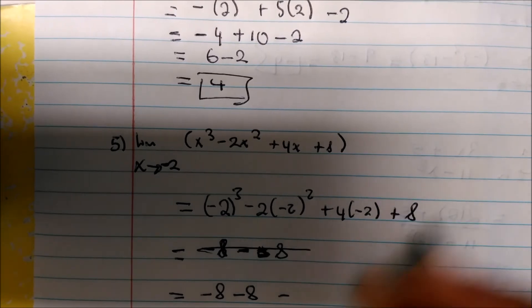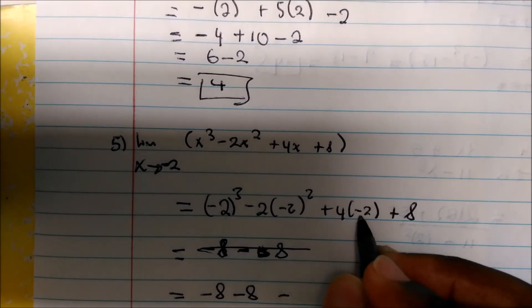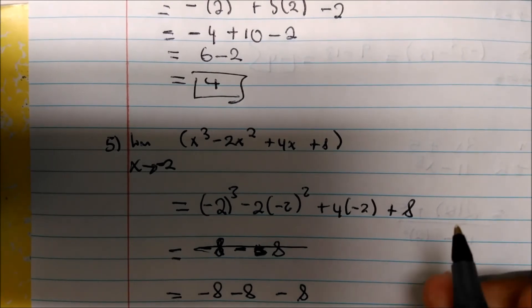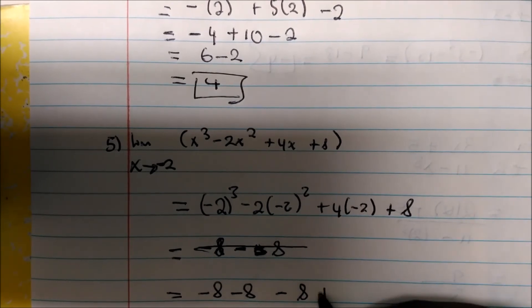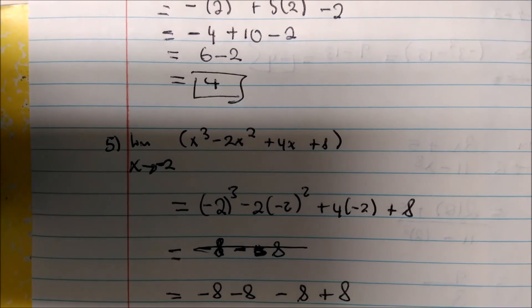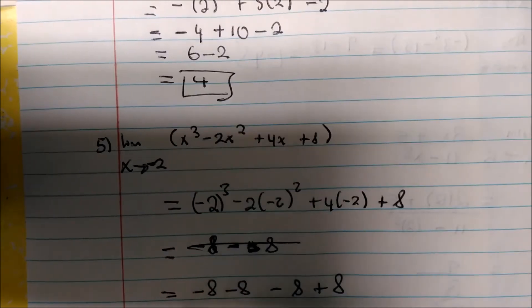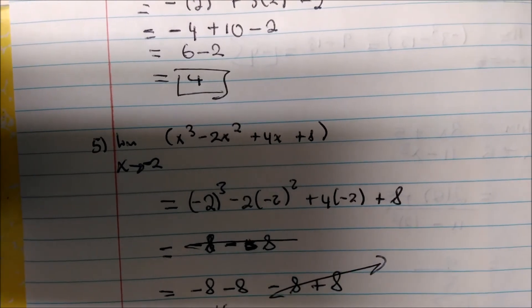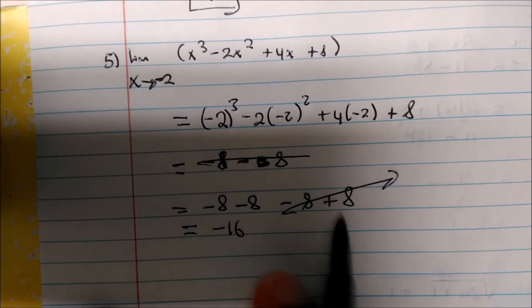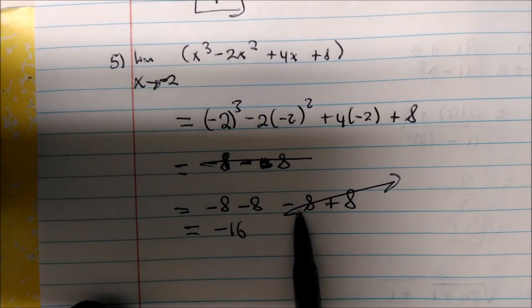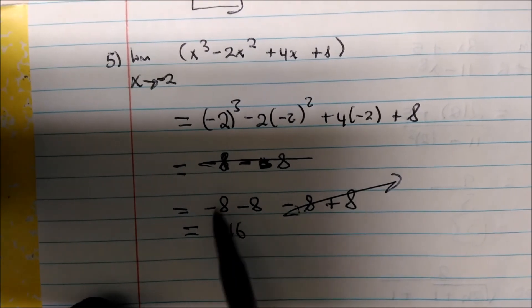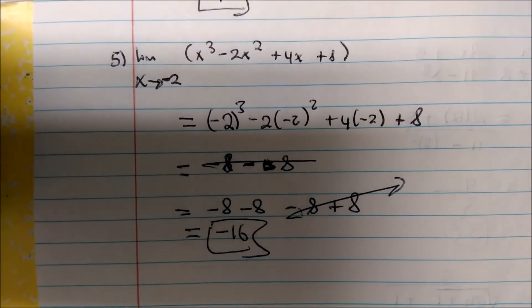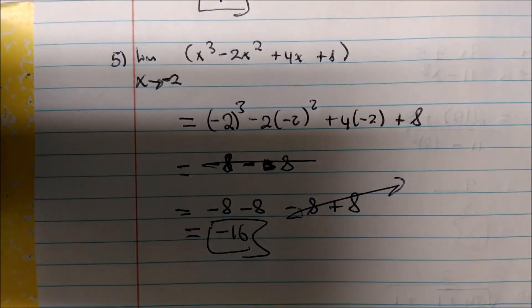2 times 4 plus a negative. So that's going to be negative 8 plus 8. So this is going to be negative 16. And this is going to be 0 because negative 8 plus 8, that's just 0. Negative 16. So this will be negative 16. So limit as x approaches negative 2 will be negative 16.